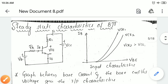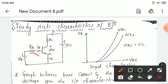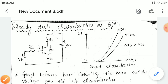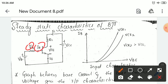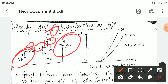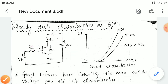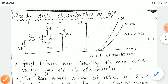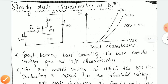This is an input loop and this is your output loop. It is RB the base resistance. So base resistance, base current, collector resistance, collector current, supply voltage, and base voltage. This is an equivalent circuit of BJT.